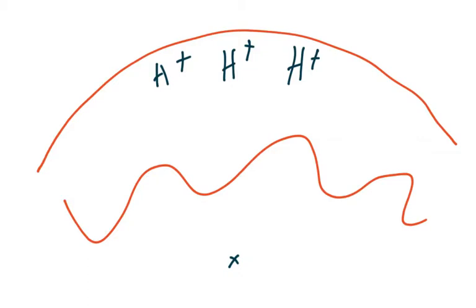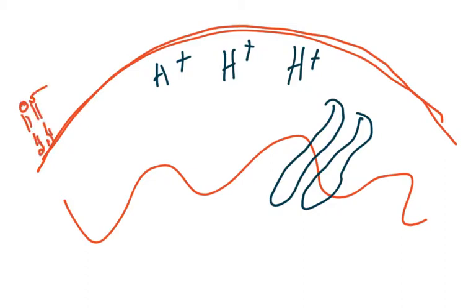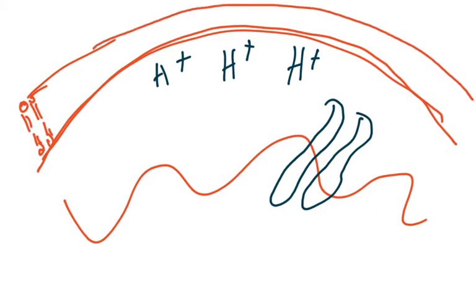The hydrogen ions have only one channel protein available to them — the ATP synthase molecule. They cannot exit through the outer membrane because it is a phospholipid bilayer; they cannot pass through the hydrophobic part. So the hydrogen ions cannot go out and cannot come back into the matrix through the membrane itself.